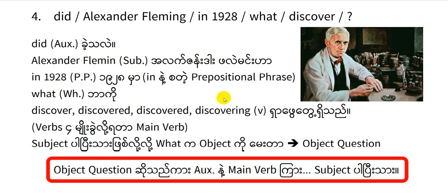Great 8 English Mahodhara. For did Alexander Fleming in 1928, what discover?